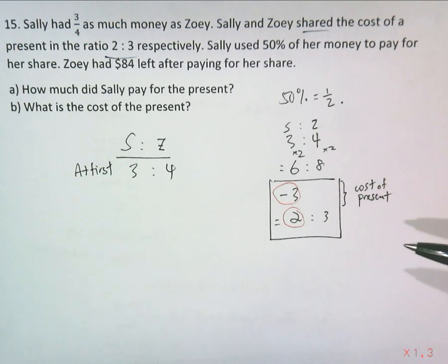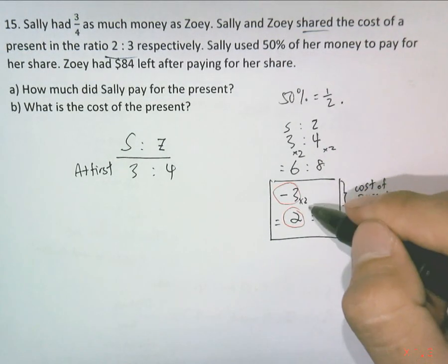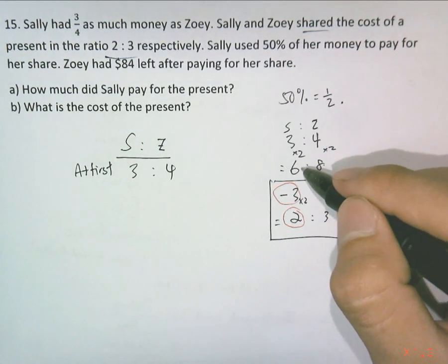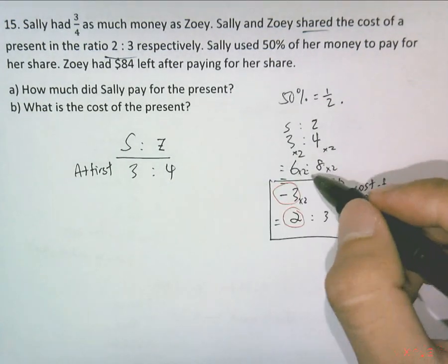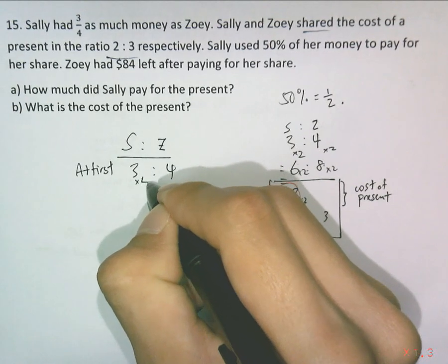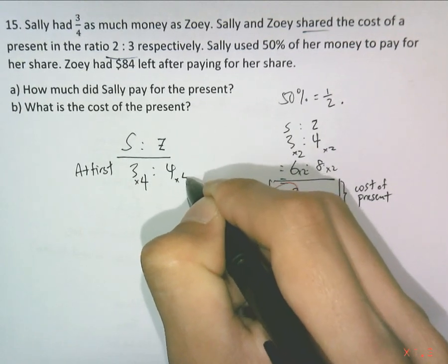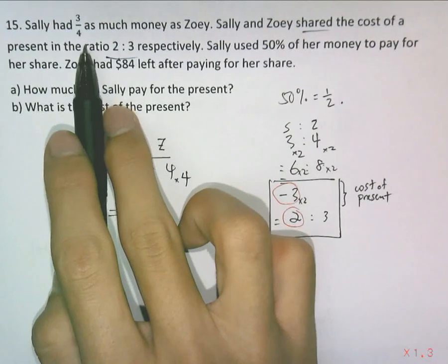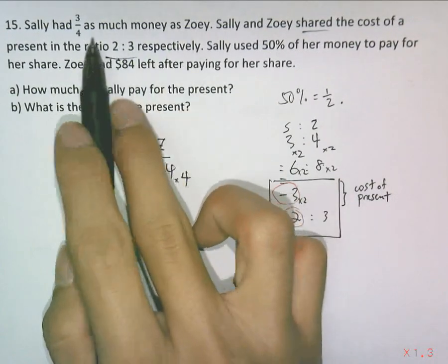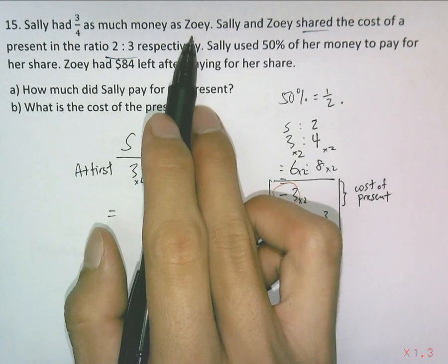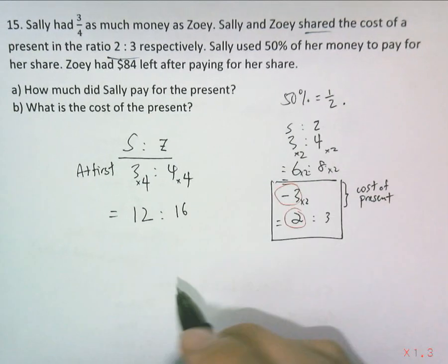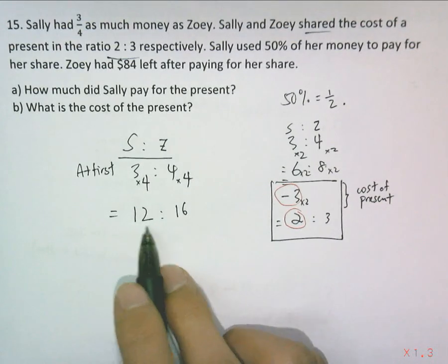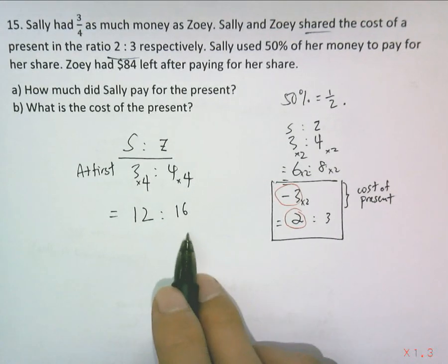So use lowest common multiple, which is 6 times 2. If I multiply this by 2, my initial ratio should have started off twice. So start this off as 6 times 2 is 12. I'm going to multiply 4 by 2. So starting the question again, three-quarters as much money as Zoey. Starting as 12 is to 16 instead. This is also three-quarters, so 3 is to 4 is correct.